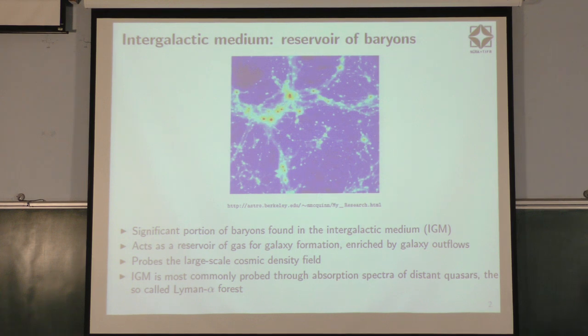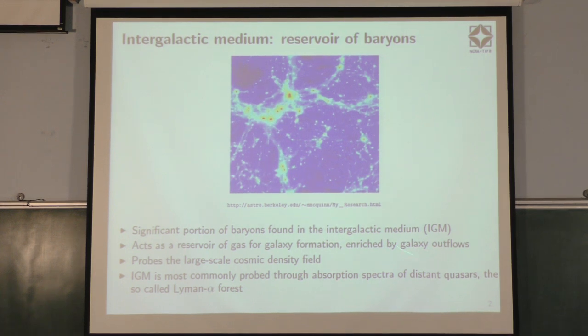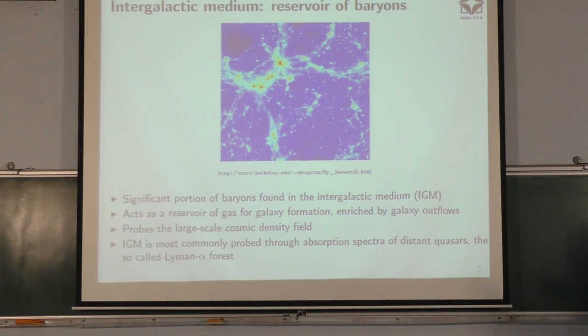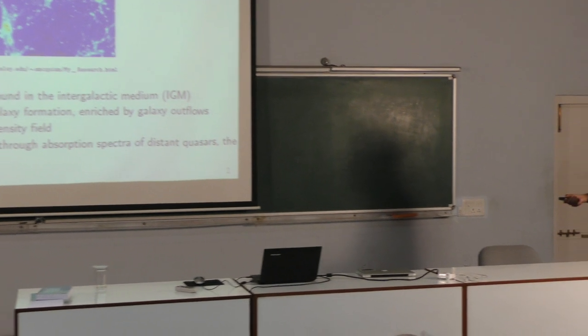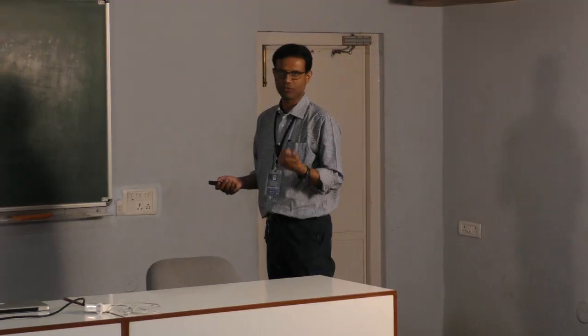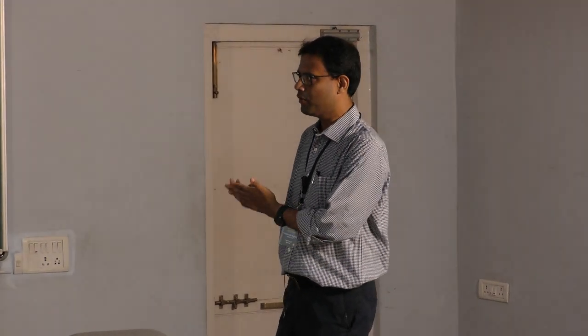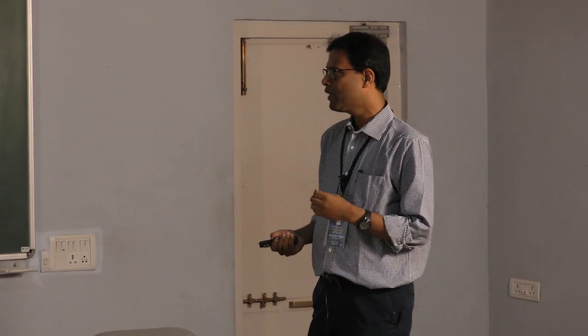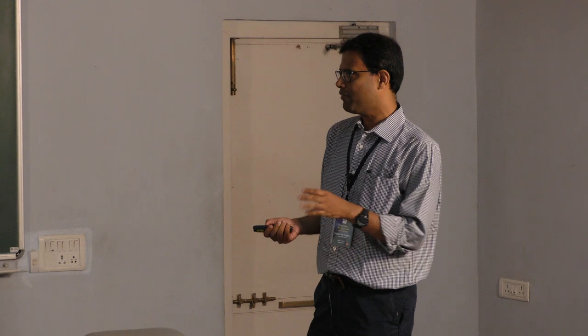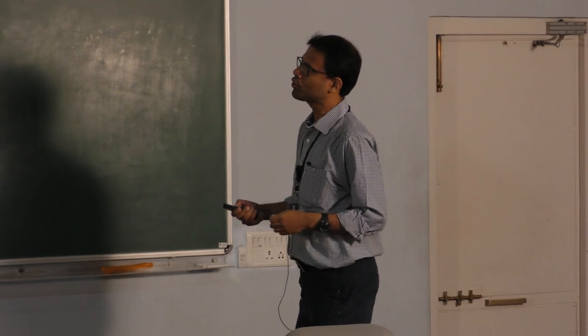It interacts with the galaxies. Once the galaxies form, there are outflows and other stuff which the galaxies throw into the intergalactic medium. So you have signatures of galaxy formation of previous epochs which are imprinted into this IGM. Also, since it's a medium between galaxies pervading all over the universe, you can actually probe the large scale cosmic density field using the intergalactic medium. So you can do cosmology in principle. Now people are doing BAOs and other stuff with the IGM. For the purpose of this talk, IGM is most commonly probed through absorption spectra of distant quasars, mainly the Lyman alpha forest.